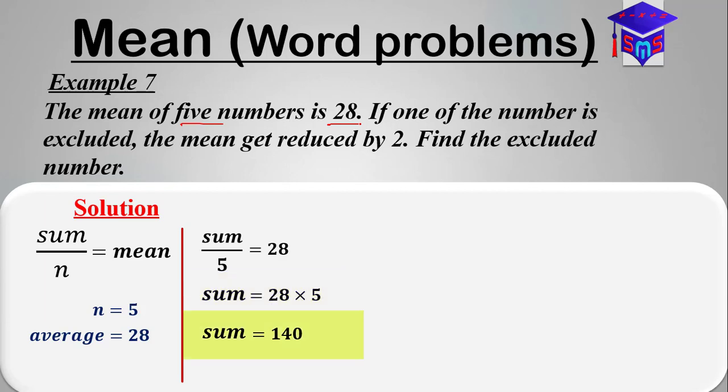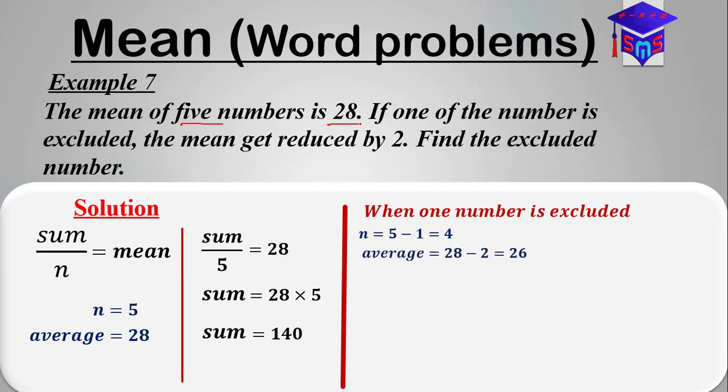That's the sum of the five numbers. Now if one of the numbers is excluded, the n becomes 4. It was initially 5 and one is excluded, so we're left with 4. The average or the mean is reduced by 2.